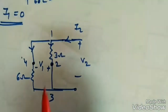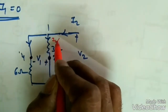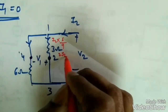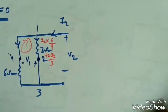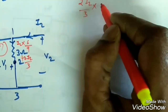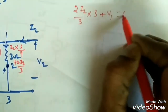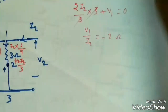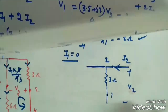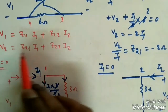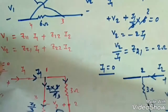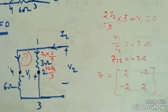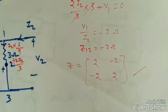Applying KVL: (2I2/3) × 3 + V1 = 0, so V1 = −2I2, giving Z12 = −2 Ω. Since Z12 = Z21 = −2 Ω (reciprocal network confirmed), the Z-parameter matrix is [2, −2; −2, 2]. For these types of GATE questions, use the standard procedure: make I2 = 0, then I1 = 0, then find the parameters.